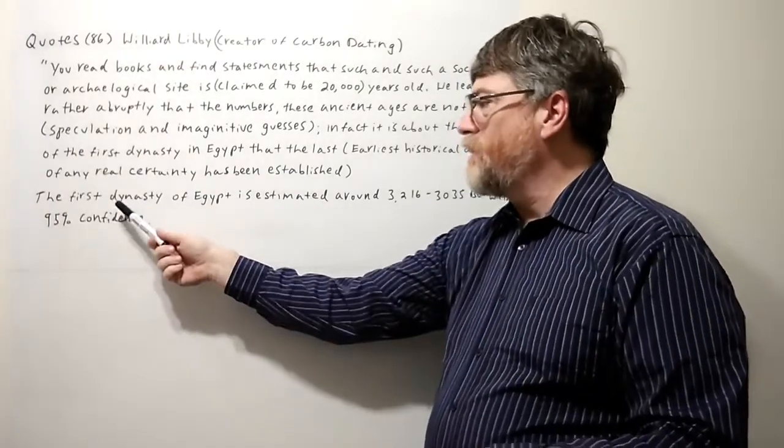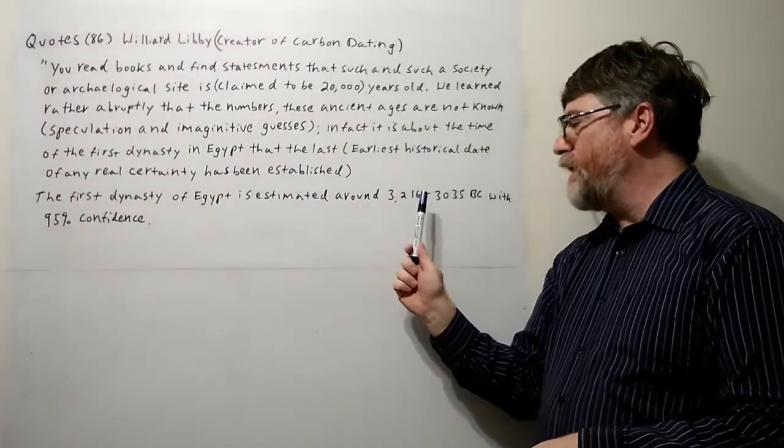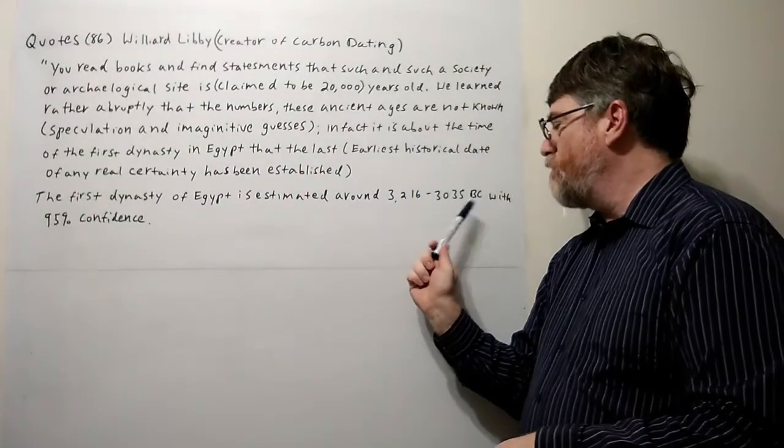I did check it out. The First Dynasty of Egypt was around 3216 to 3035 BC.